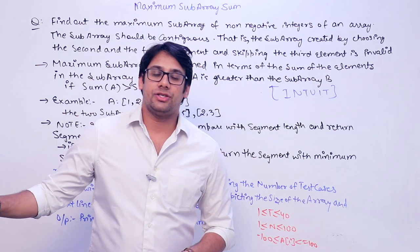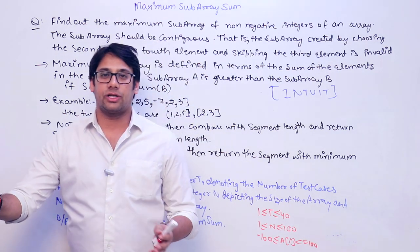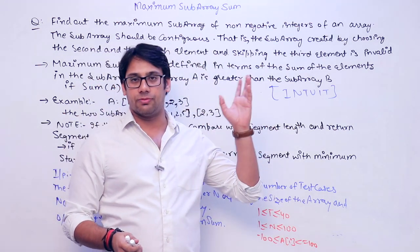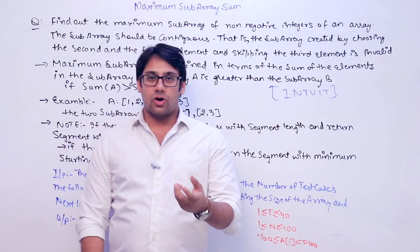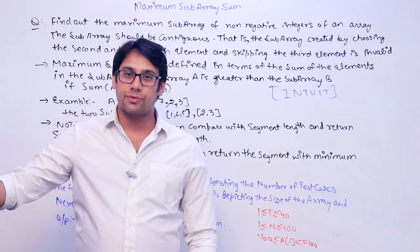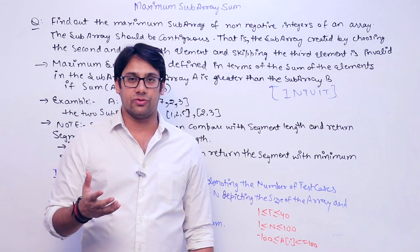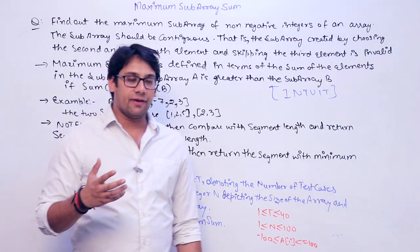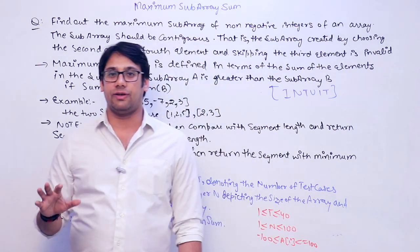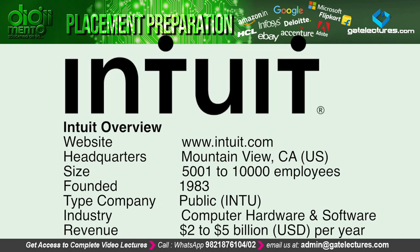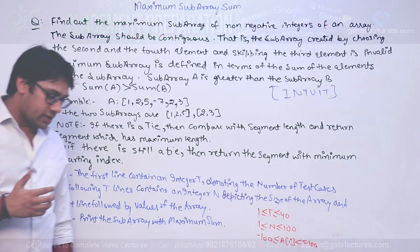The next problem we are discussing is from the company Intuit. From now on, with every video, I will also give a small introduction to the company whose interview problems we are discussing. Intuit is a firm which creates business and accounting software, based in Mountain View, California. It was founded in 1983, has offices in Palo Alto, and the CEO is Brad Smith. The annual revenue in 2017 was around 5.177 billion dollars, with an operating income of 1.395 billion dollars.